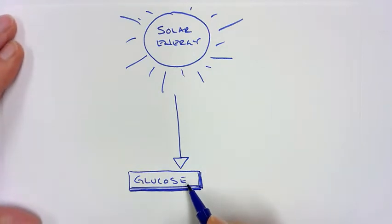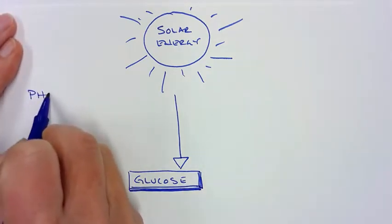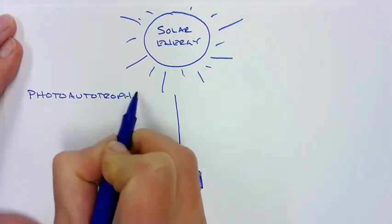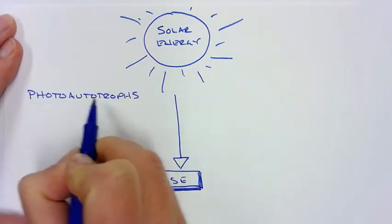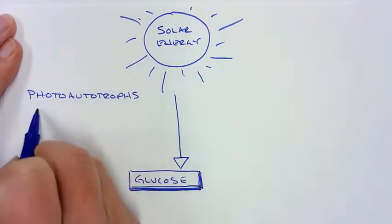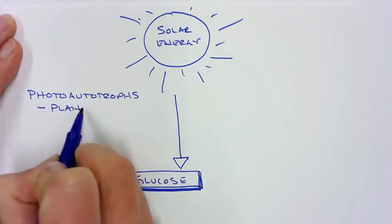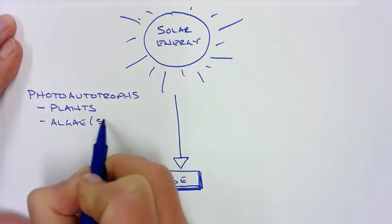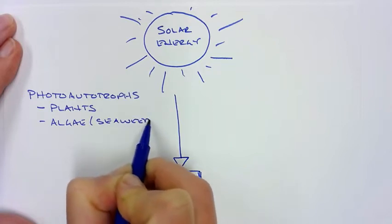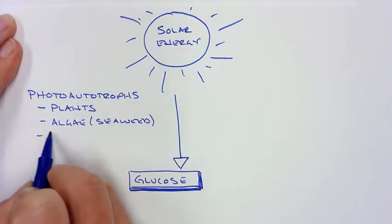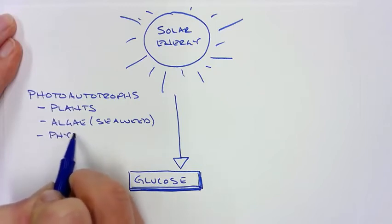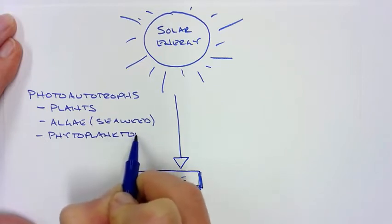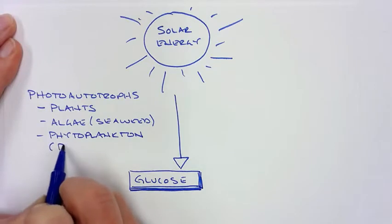The organisms that convert it are called photo-autotrophs. Photo means light, auto means self, and trof means food. These include plants, algae, things like seaweed, as well as phytoplankton. These are the things that live on the surface of the ocean. These are plant-like protists.